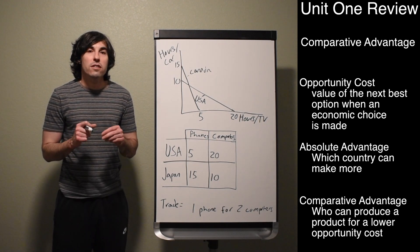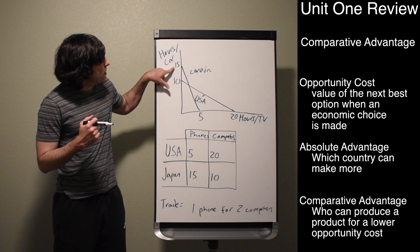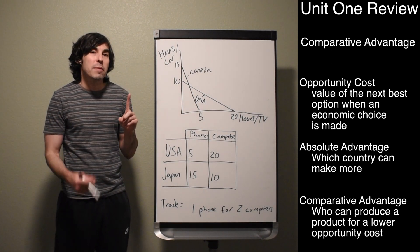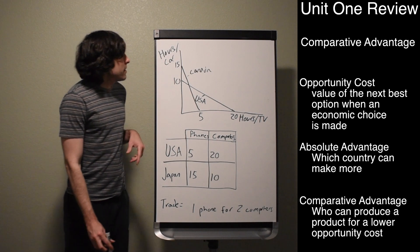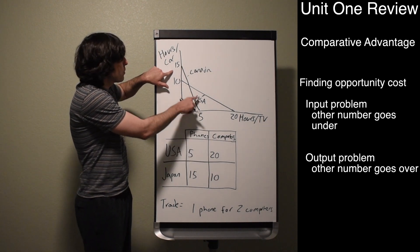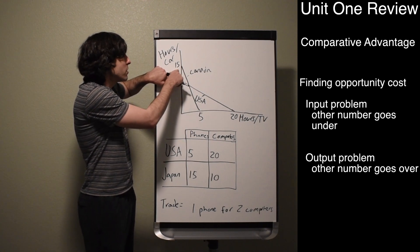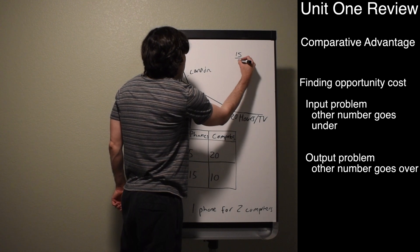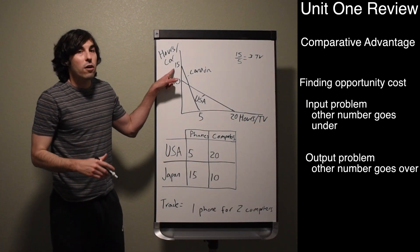Comparative advantage is the country that can make a product for the lowest opportunity cost. Opportunity cost is what you give up — the value of the next best thing you could have made. So every time Canada makes one car, they're giving up some amount of TV. Canada takes 15 hours to produce a car and 5 hours to produce a TV. In an input problem, the other number goes under: 15 divided by 5 equals 3 — so Canada gives up 3 TVs every time it produces one car.